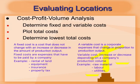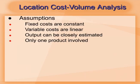After we determine our fixed cost and variable cost, we will plot the total cost on graph paper. And after that, we will determine the lowest total cost. Now we go to assumption. Number 1, fixed costs are constant. Fixed costs graph is a graph with horizontal line. So fixed costs are constant.